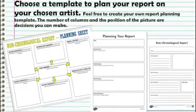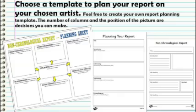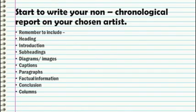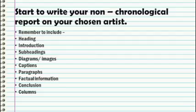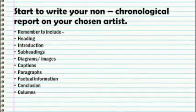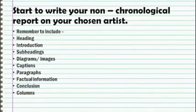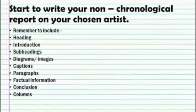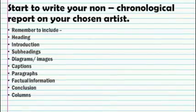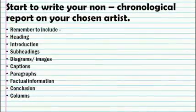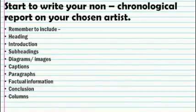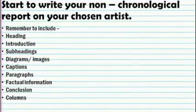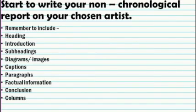When you start your writing, remember to include the features taught last week: a heading, an introduction, subheadings, diagrams or images from the internet, captions for those diagrams and images, organizing your work into paragraphs, and making sure whatever information you include is factual. Finally, include your conclusion. If you need to, set your work out in columns or present it in any way you choose as part of your writing.